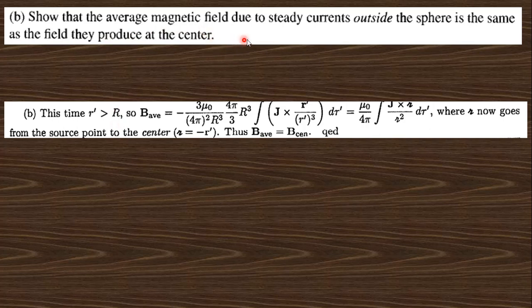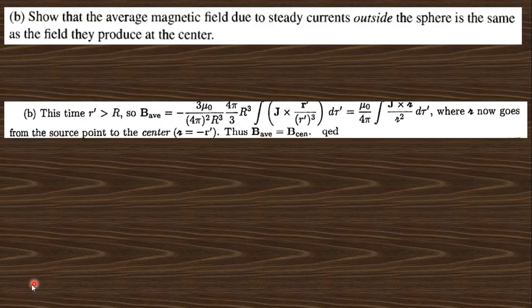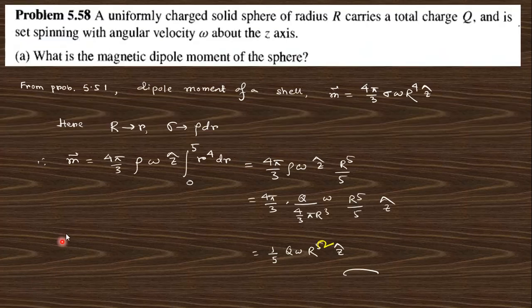The average magnetic field due to a steady current outside the sphere is the same as the field it produces at the center. For the outer point, you take the corresponding expression and integrate to get this result.